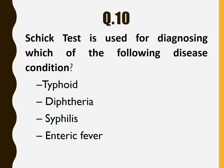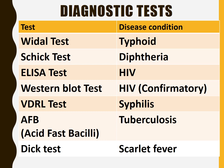Question number 10: Schick test is used for diagnosing which disease? Options are Typhoid, Diphtheria, Syphilis, and Enteric fever. The answer is Diphtheria. Diagnostic tests: Widal test is used for Typhoid. Schick test is for Diphtheria. ELISA is for HIV. Western blot test is the confirmatory test for HIV. VDRL test is for Syphilis. AFB (acid-fast bacillus) is used for tuberculosis. Dick test is used for scarlet fever — this is a rare but important question.